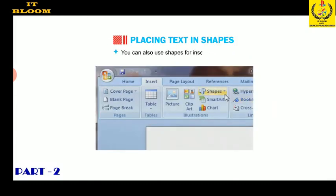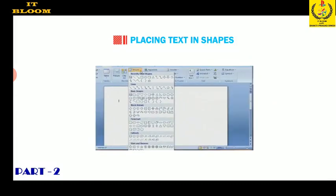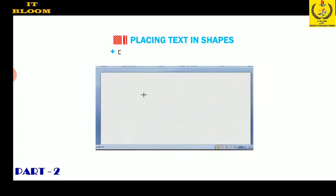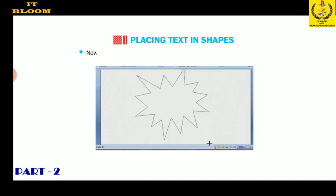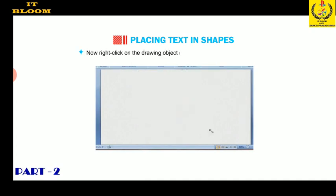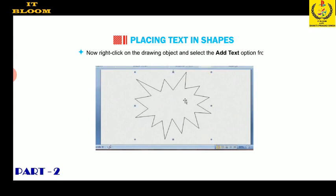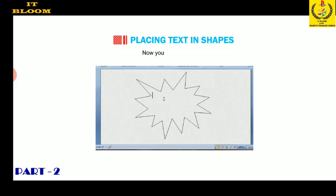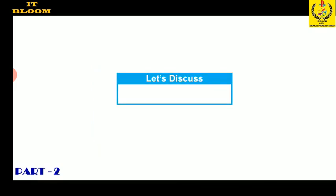You can also use shapes for inserting text. Select the shape of your choice and drag the selected shape according to your need. Now right-click on the drawing object and select the 'Add Text' option from the shortcut menu. The insertion point appears in the box and you can type the text.